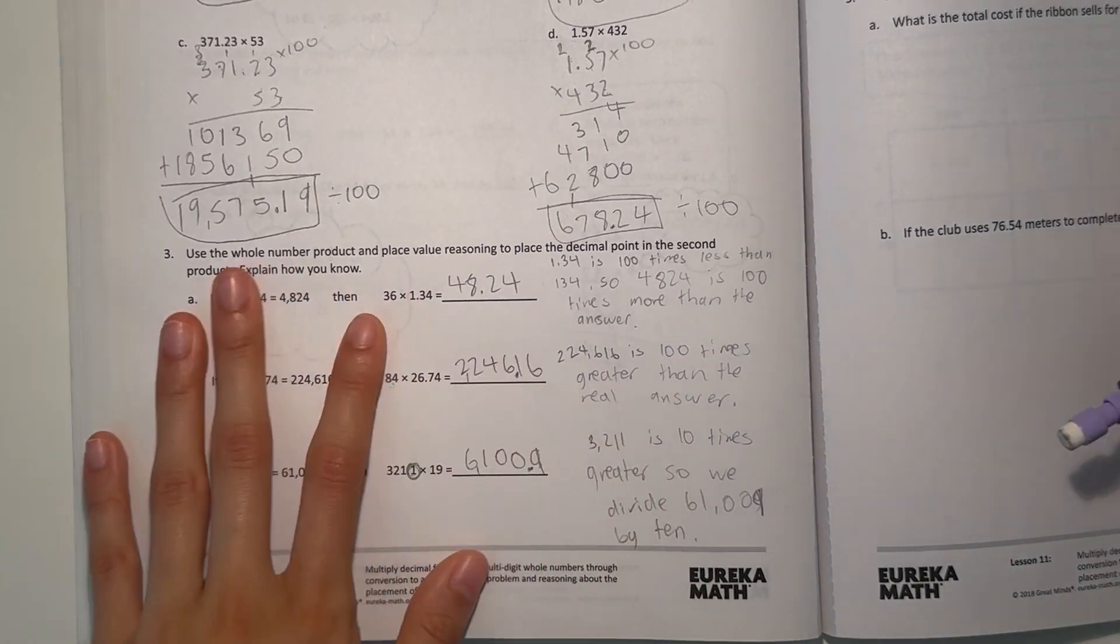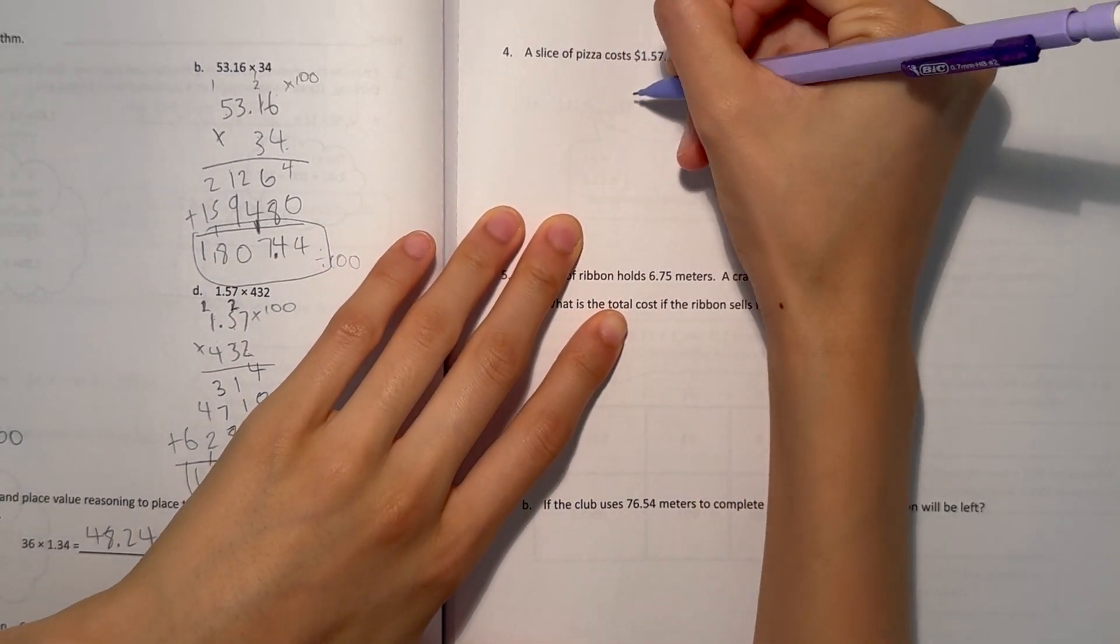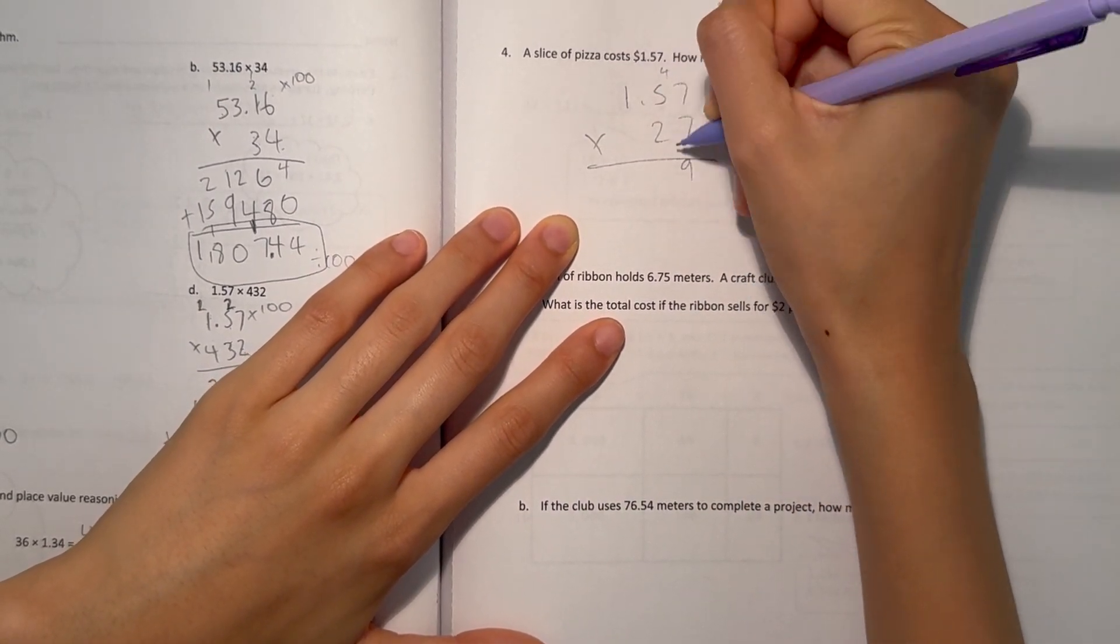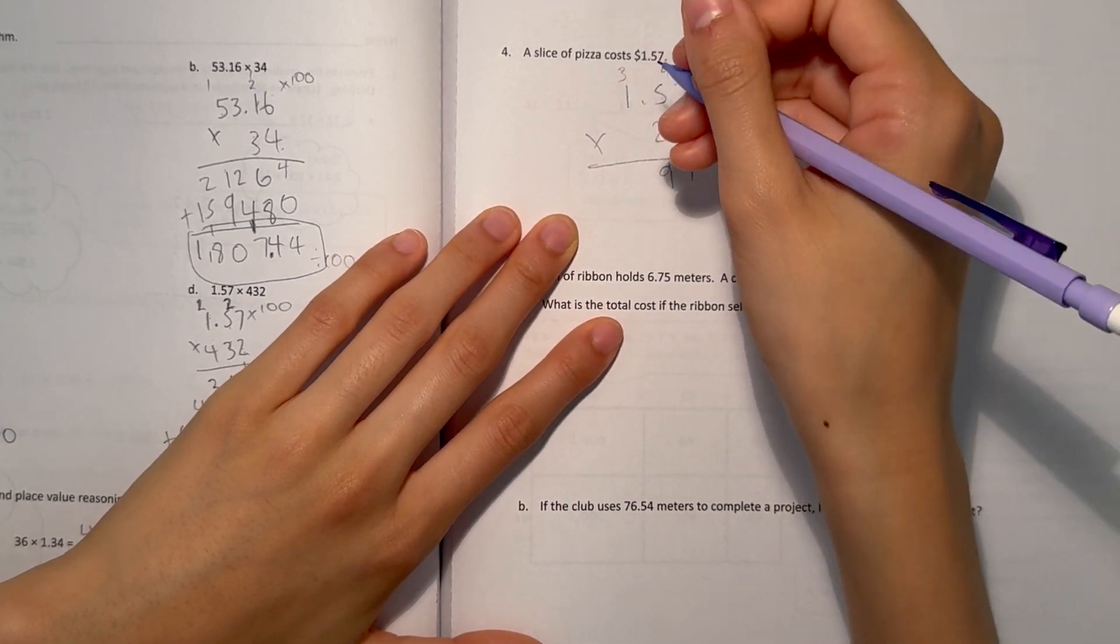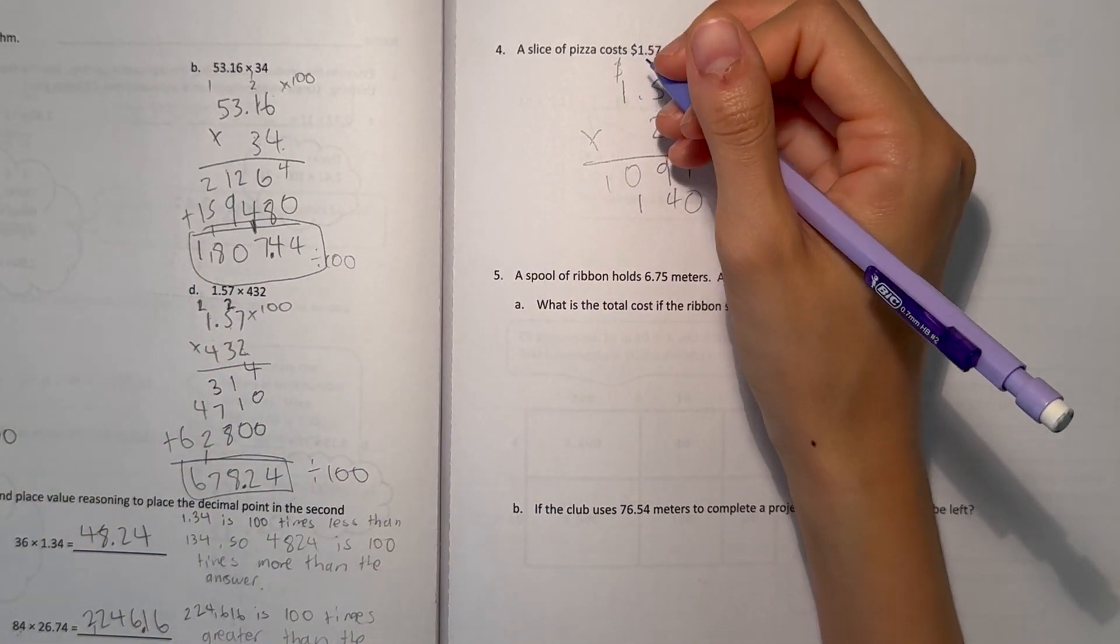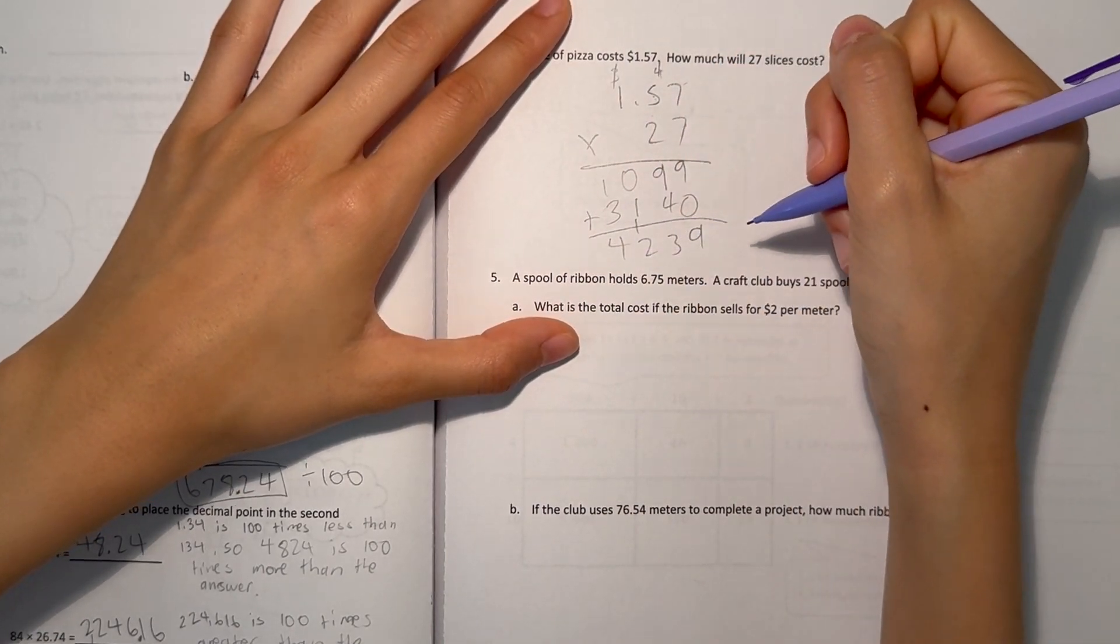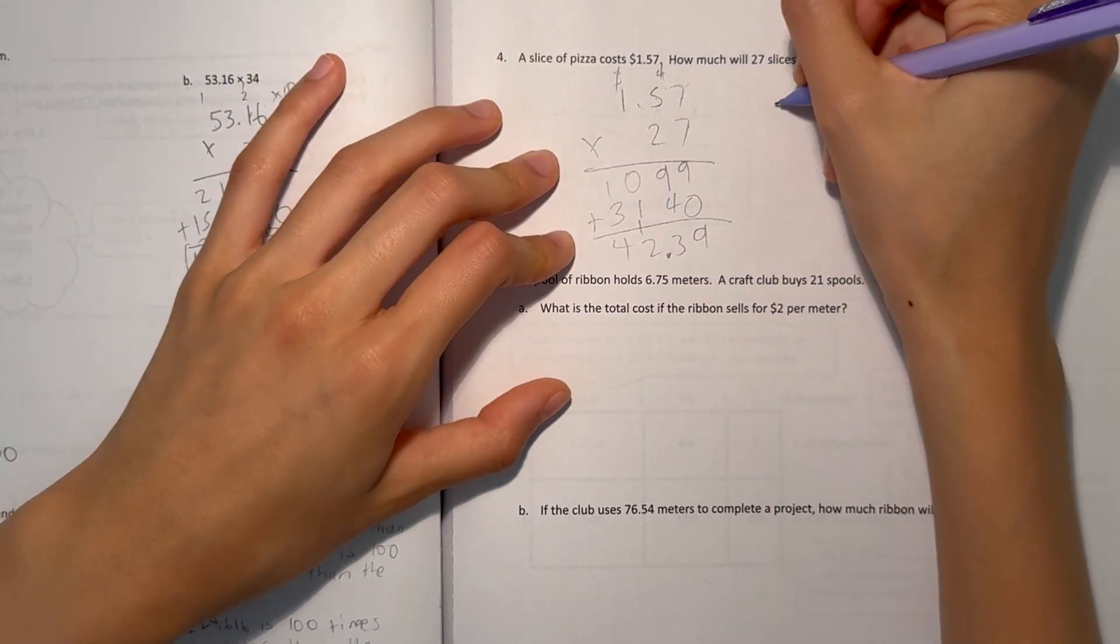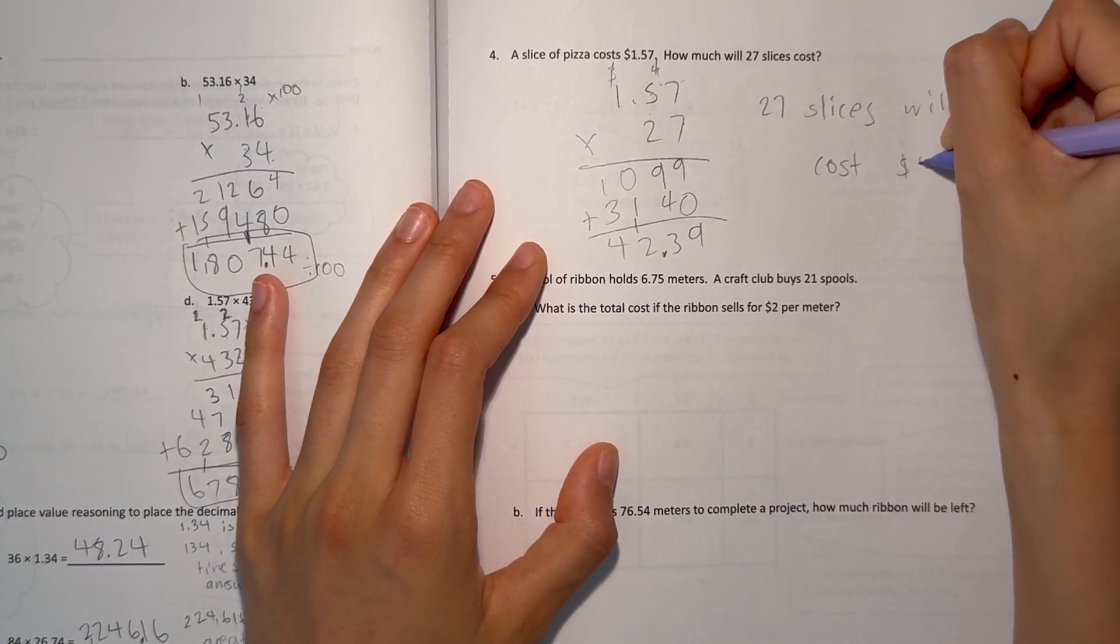Number 4: A slice of pizza costs $1.57. How much will 27 slices cost? So 1.57 times 27. Again, we ignore the decimal point. 7 times 7 is 49, 5 times 7 is 35 plus 4 is 39, 1 times 7 is 7 plus 3 is 10. Add a 0. 2 times 7 is 14, 2 times 5 is 10 plus 1 is 11, and 2 times 1 is 2 plus 1 is 3. And we add: 4,239. And now we divide by hundreds. Two decimal points here, so two decimal points here. 42.39. So 27 slices will cost $42.39.